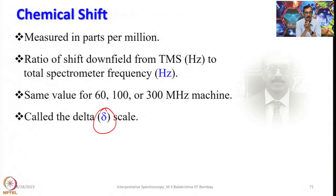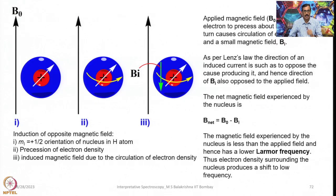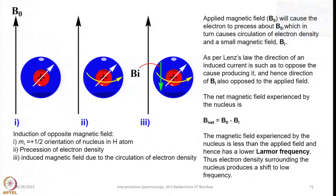We use the scale called the delta scale. When we measure in parts per million we use the delta scale, and to make you familiar with chemical shift terms I am going back to the basics discussed in my first lecture.